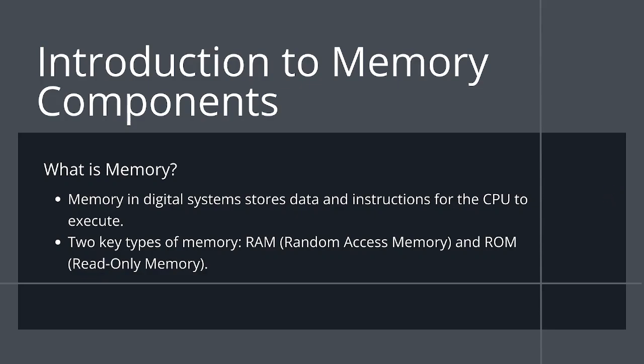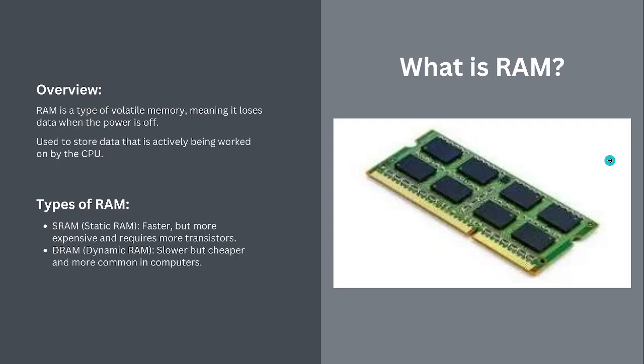Memory is like the brain of your digital system — it stores information or data for the CPU to work with. There are two key players here. Number one: Random Access Memory, RAM. Think of this as your desk — it's where you put everything you are working on right now, but once the power goes off, everything disappears. Number two: Read Only Memory, ROM. This is like a bookshelf where you keep all your important books — it stays the same even if you turn off the lights.